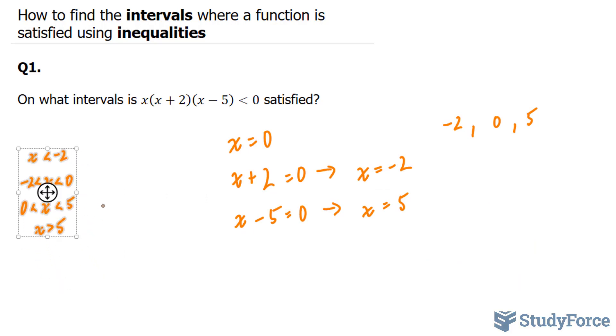So if we choose a number that is less than -2, and we apply it to this equation, let's pretend we choose -3. (-3)(-3 + 2)(-3 - 5) will always give you a negative number.